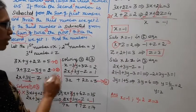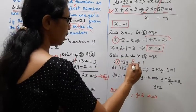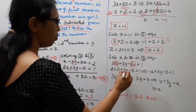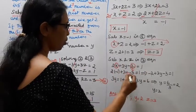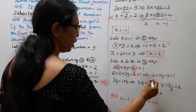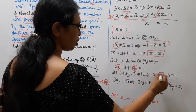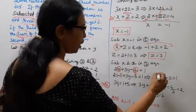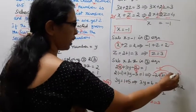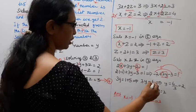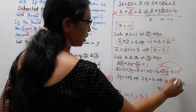Substituting x = -1 and z = 3 into equation 3: 2x + 3y - z = 1. So 2(-1) + 3y - 3 = 1, giving -2 + 3y - 3 = 1. Then -2 - 3 = -5, so 3y = 1 + 5 = 6. Therefore y = 6/3 = 2.